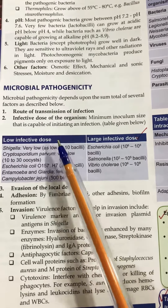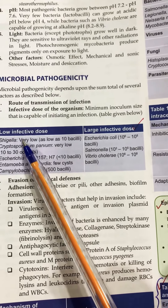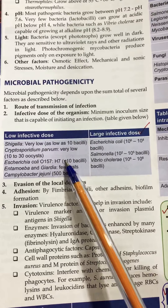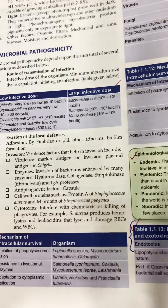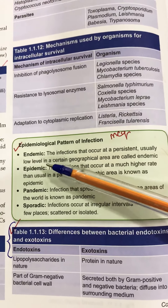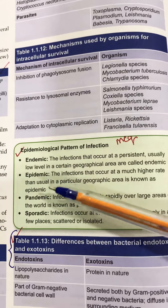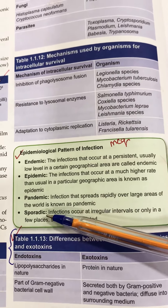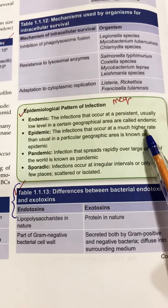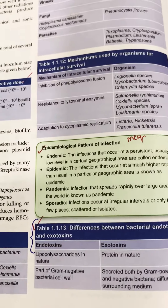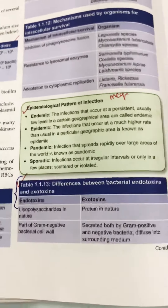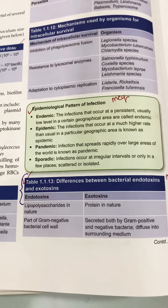Coming on to the last few important topics: infective dose of the organism is quite important — you should know about the low infective dose and the large infective dose of various important organisms. Then the important definitions: endemic, epidemic, pandemic, sporadic — these should be on your fingertips. Recently, the coronavirus has been in the news; be aware of that virus as it may come in your upcoming examination.